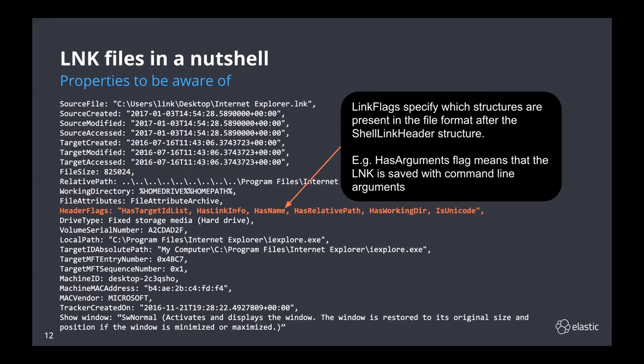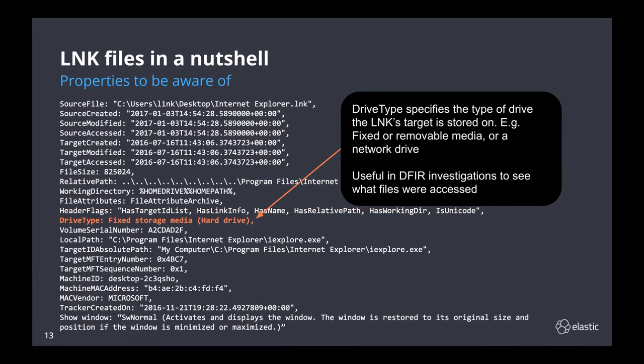You've also got the 32 link flags, which specify which structures are present in the rest of the link file. Some are reserved or unused. For example, the HasArguments flag means that the link is saved with command line arguments, and HasIconLocation means that a path is specified to display an icon for the link file. The drive type property specifies the type of drive the link file is stored on — it could be a fixed drive, removable media, or a network drive. This value is useful in forensic investigations to verify what files were accessed by a user or attacker.